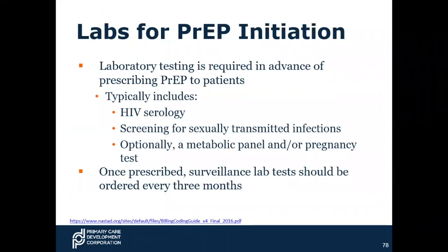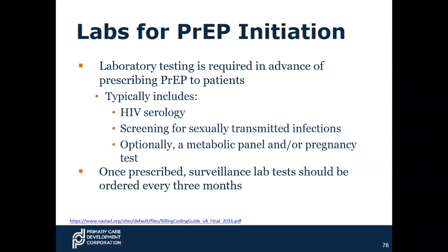For labs for PrEP initiation, make sure you're coding your labs separately and, if necessary, using the appropriate modifiers. Your billing and coding staff should know if you need to use that lab-related modifier. Laboratory testing for PrEP typically includes HIV serology screening and, optionally, a metabolic panel. Once prescribed, you'll want to order surveillance labs every three months, and you would bill each time they are received.